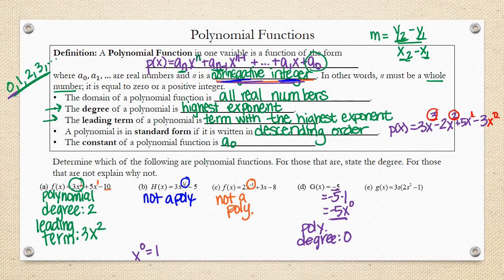Looking at letter e. So, for letter e, notice that this is in factored form. So, if we're actually wanting to figure out what the leading term is, what the degree is, and if this is a polynomial, you'd want to usually factor this out.